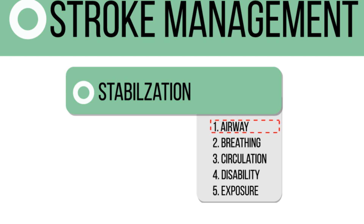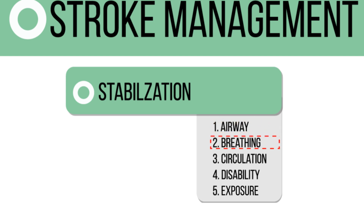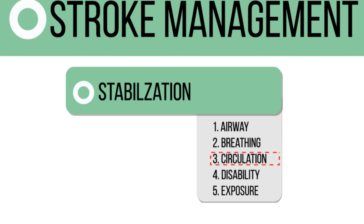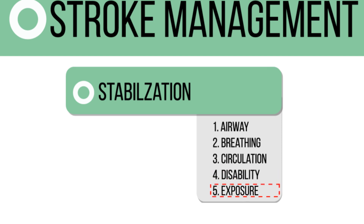Stroke patients are usually stable, but for the sake of completeness, I'll mention breathing as well. It is very important to measure the blood pressure of the patient — most stroke patients have elevated pressure levels. Measure the GCS under disability. If there's a history of a fall, check the entire body for secondary injuries.